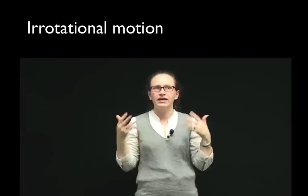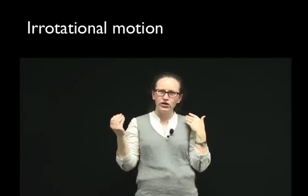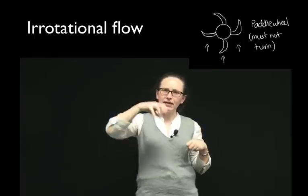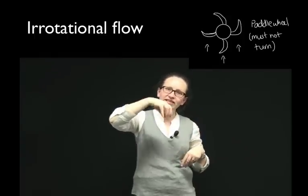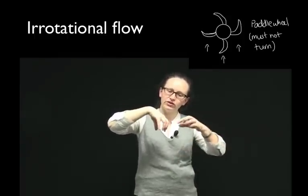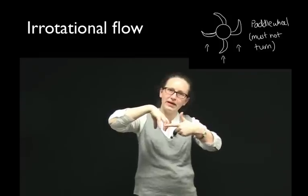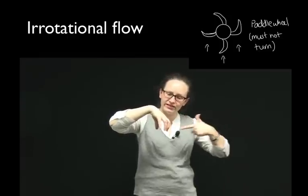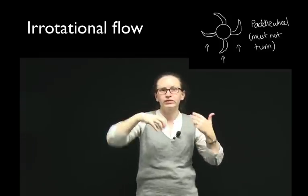The second thing we need to have ideal fluid flow is irrotational flow. This means that if we put a paddle wheel at any point in that flow, it doesn't spin. The force on the right of the paddle wheel is the same as the force on the left of the paddle wheel.